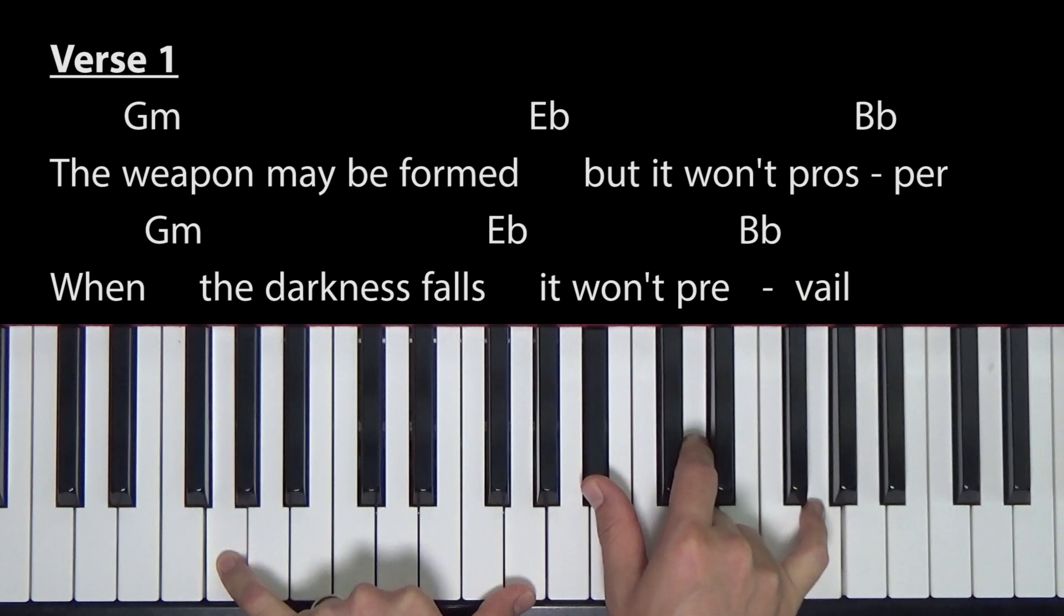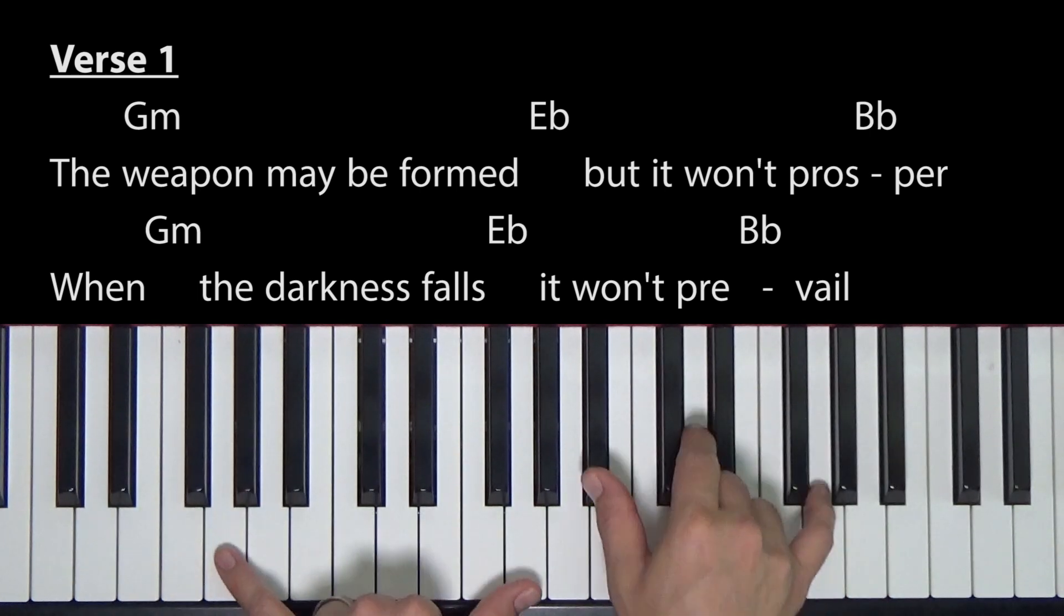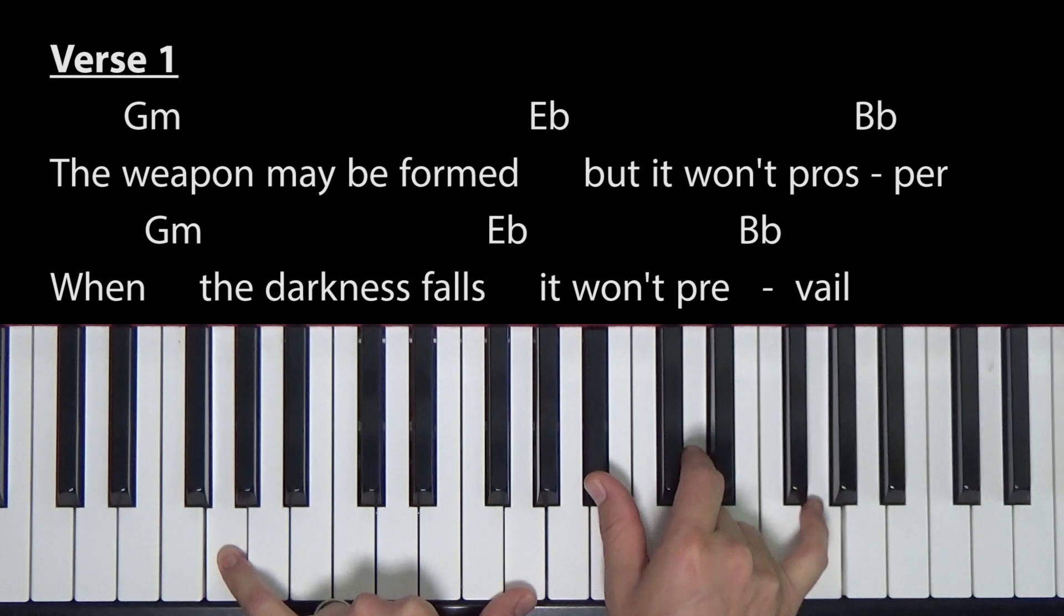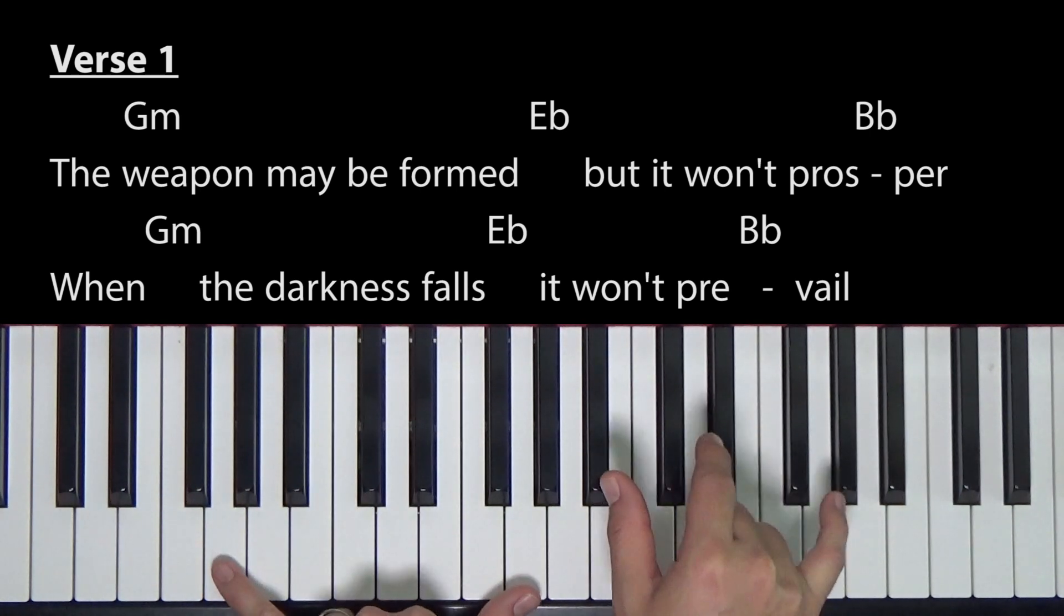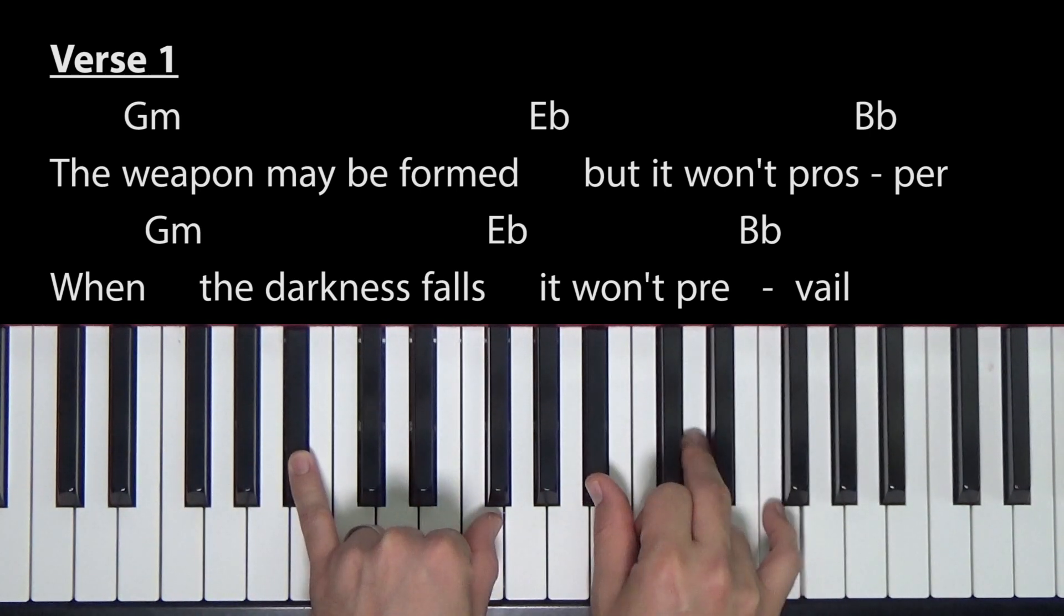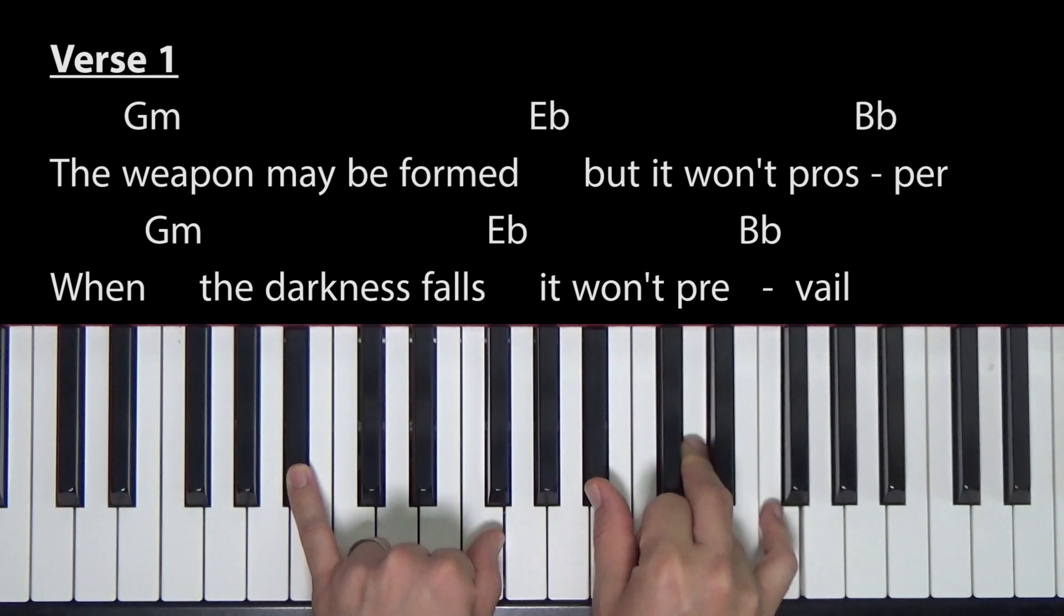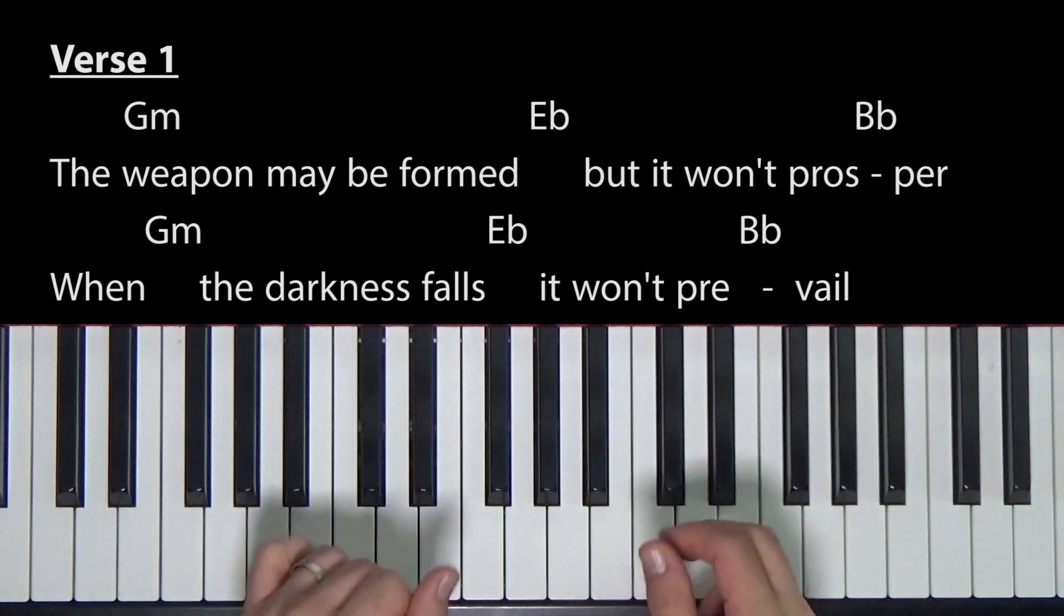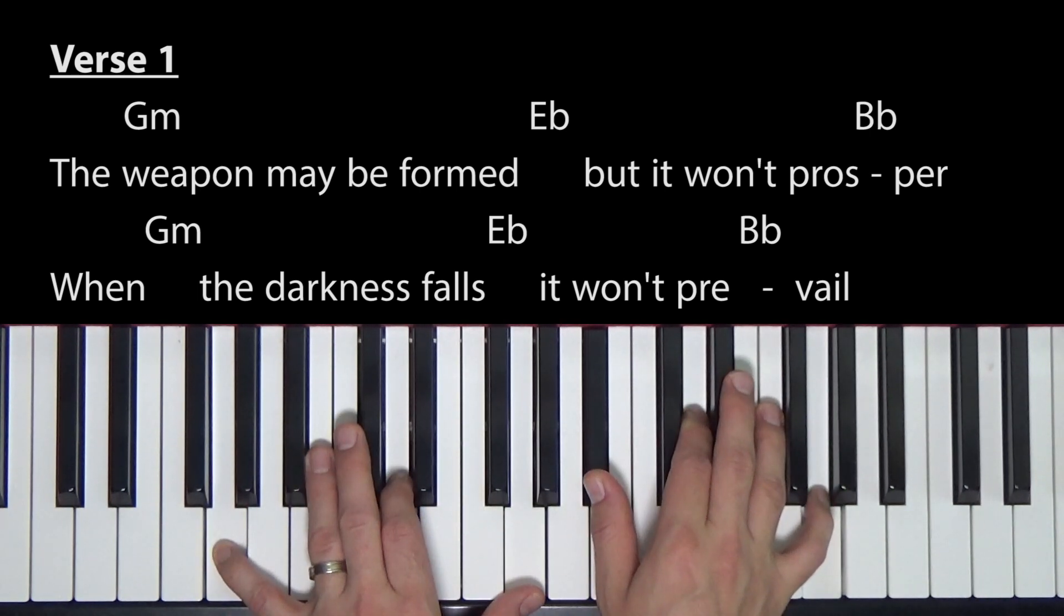One thing to keep in mind, if you're trying to play and sing this and you haven't done much of that, this song may not be the best to start with, because there's a lot of syncopation in the lyrics. The weapon may be formed, but it won't prosper. It's like all on the upbeats and weird places. So to keep a steady beat and sing that could be very difficult for you. But you can do it. It might take you weeks or a month just kind of working on it every day. But do it. Take it slowly. So work on getting this right hand just going. The weapon may be formed, but it won't prosper. When the darkness falls, it won't prevail. All right. But you just really need to know, be able to sing the lyrics, first of all, without playing. Be able to play with someone singing and then start meshing them both together and you'll get it.